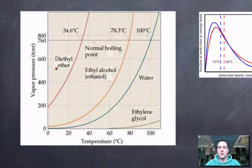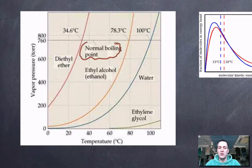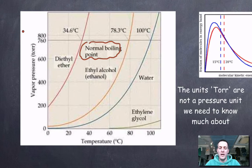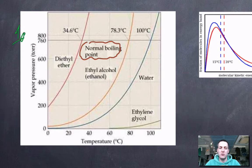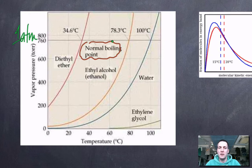Let's look at a graph of vapor pressures for three different liquids: diethyl ether, ethanol, water, and ethylene glycol. There's a line marked on this graph indicating the normal boiling points of these liquids. This pressure — 760 Torr — equals about one atmosphere, so at sea level we'd expect water to boil at 100°C.